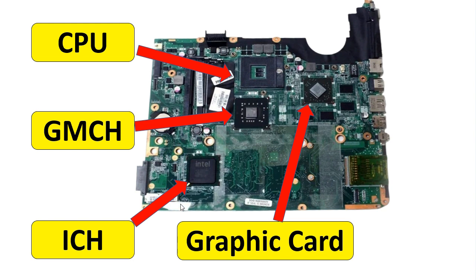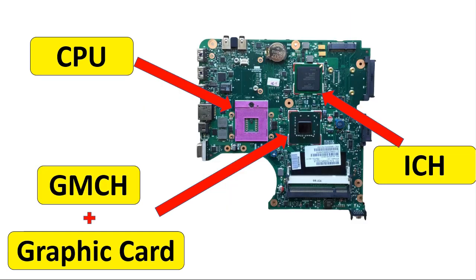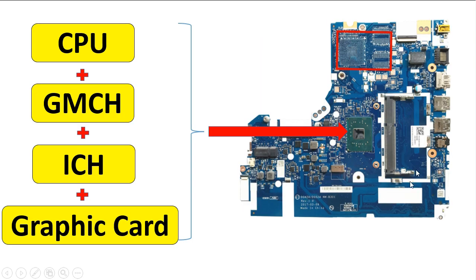You can find a dual-core motherboard where chipsets are separated — this is the basic motherboard that every technician or engineer should understand. In a more advanced design, the graphic card is integrated with the North Bridge. In the most enhanced version, all controllers are integrated into one chip containing the processor, MCH, ICH, and the graphic card.